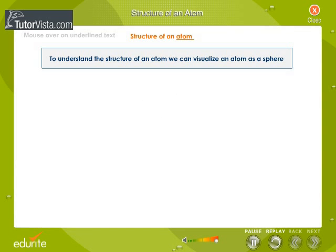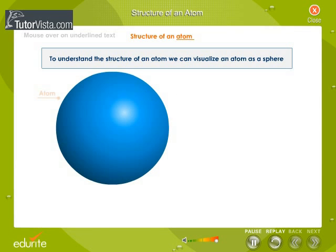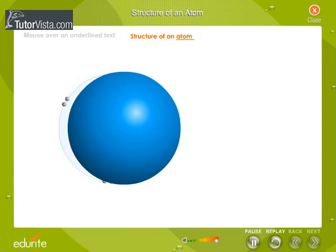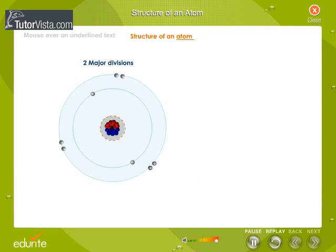To understand the structure of an atom, we can visualize an atom as a sphere. The atom has two major divisions. In the center of the atom, there is a nucleus.